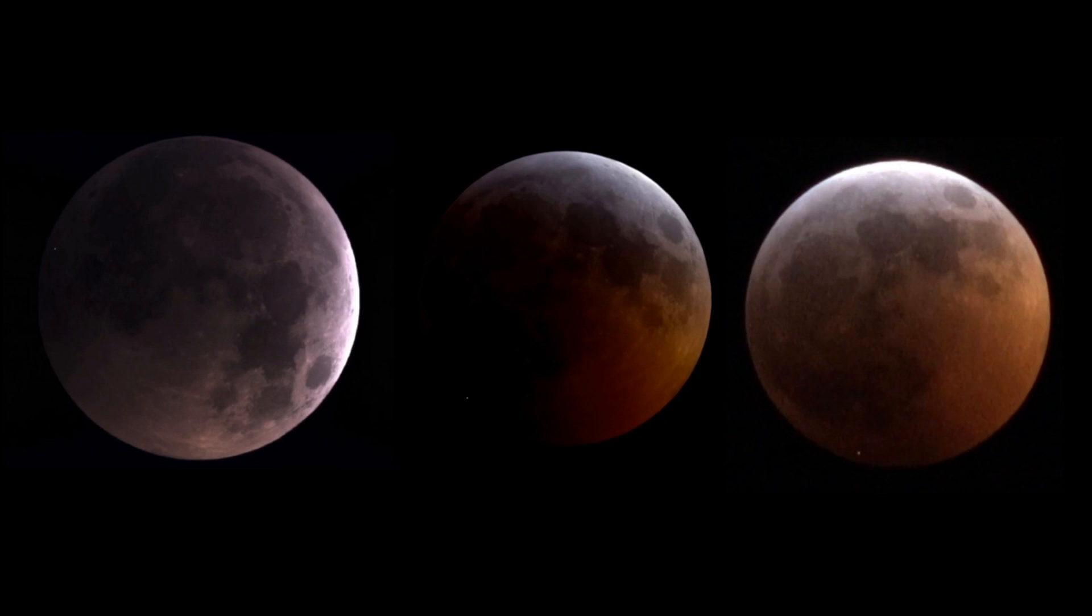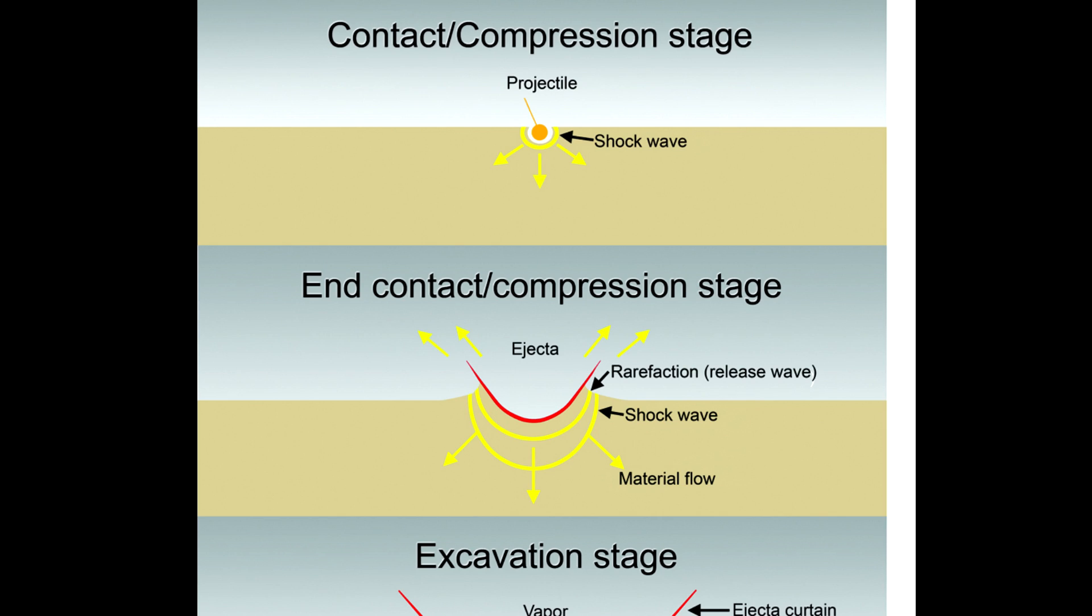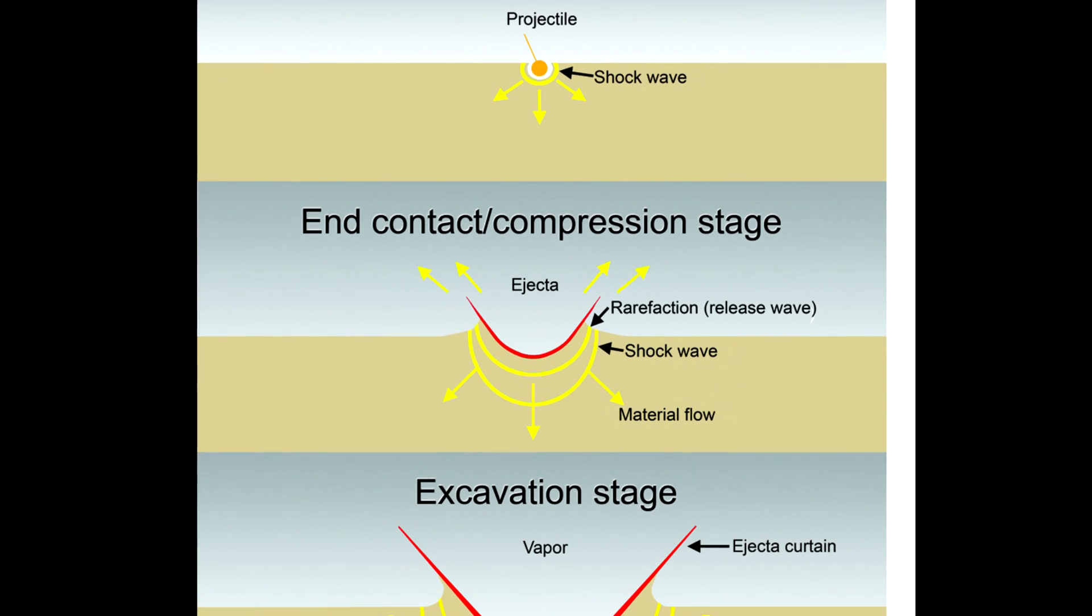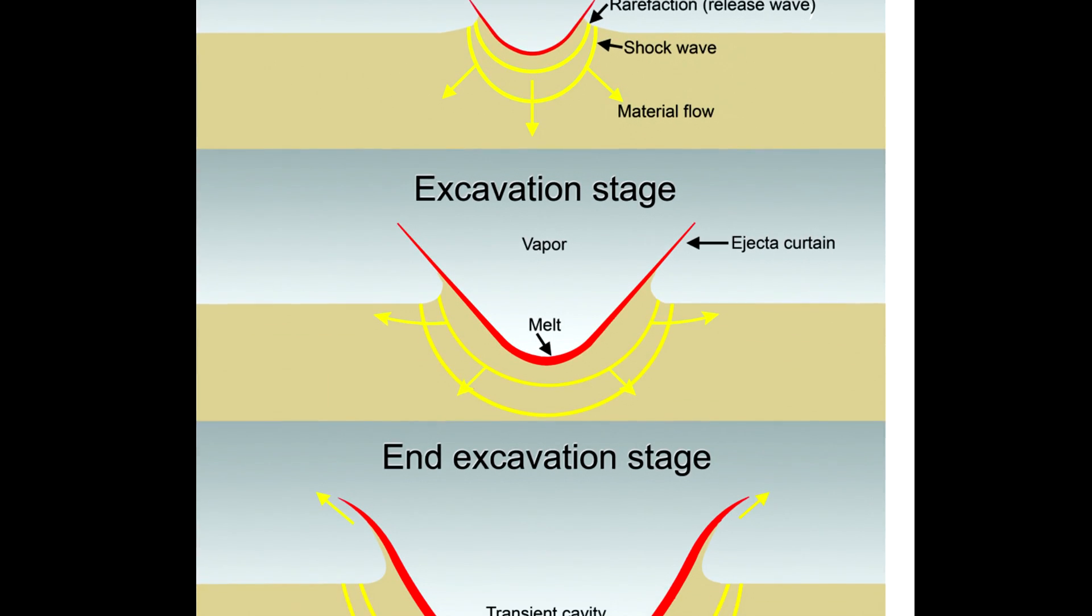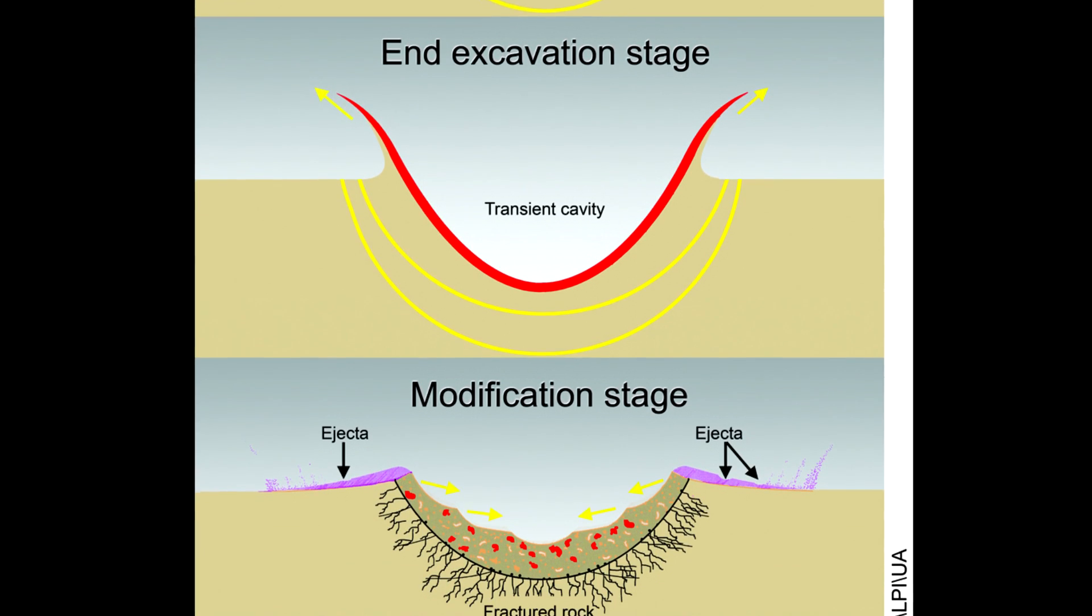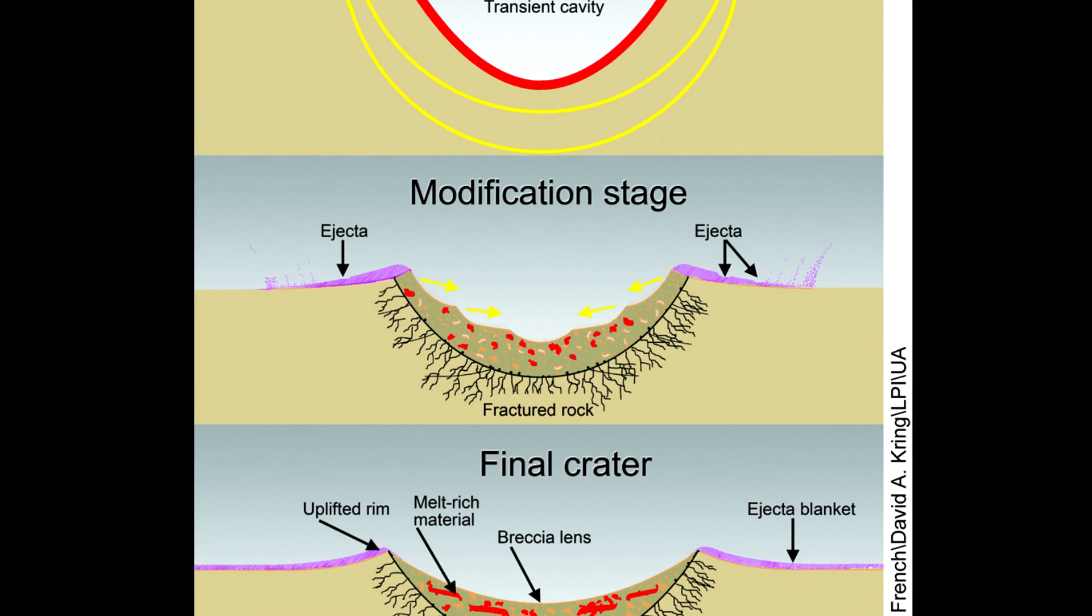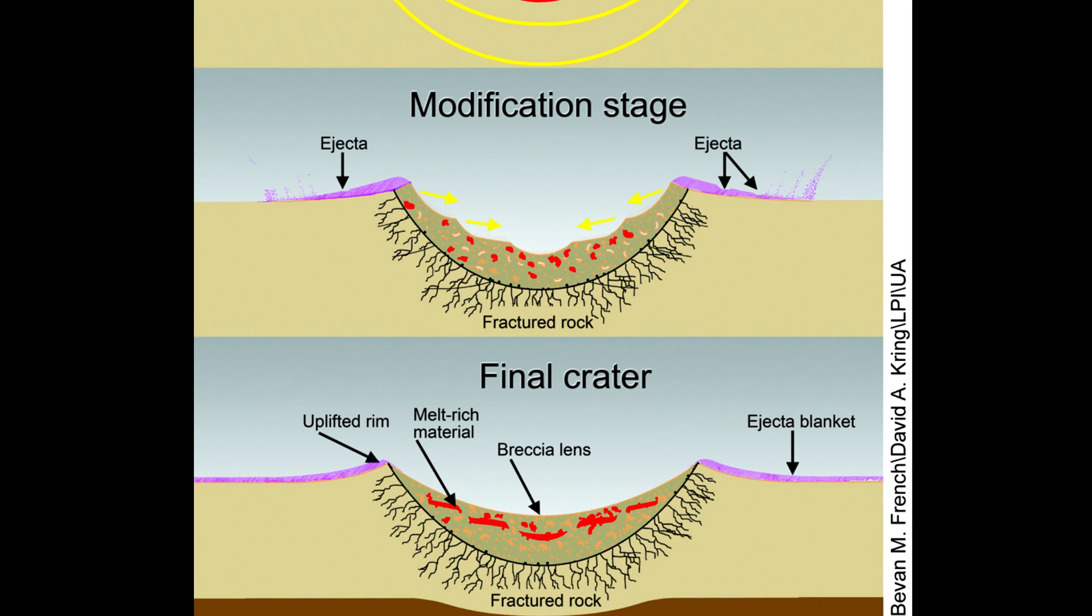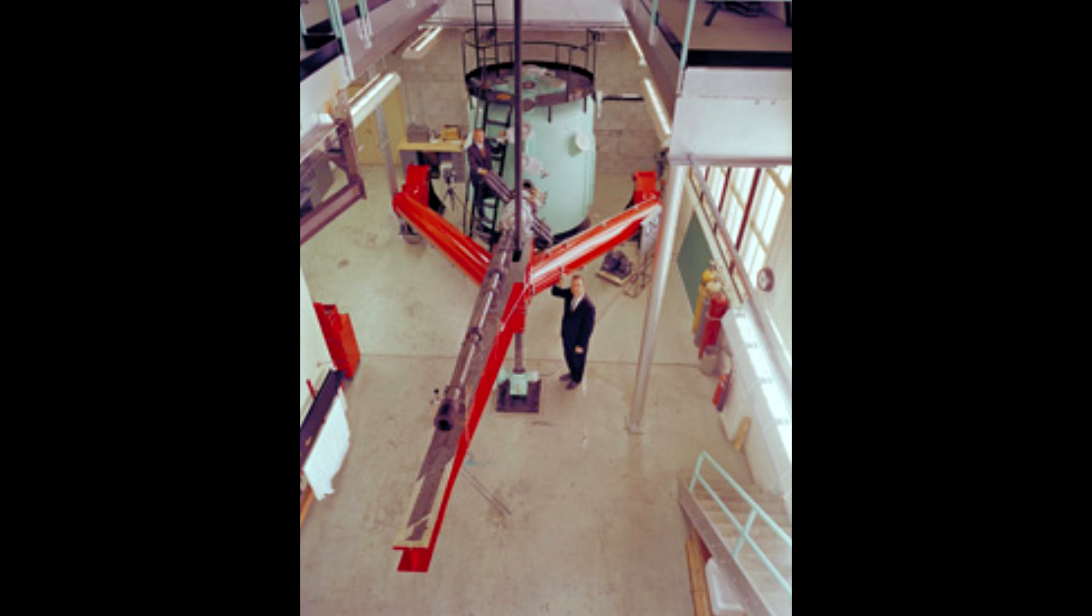The actual physics of the crater formation are hideously complex. When the object arrives, it creates a compression shock wave, which interacts with the surface producing rarefaction waves, which causes jets of material. It's all terribly difficult to understand and boil down. But the good news is, there's a couple of ways to model this.